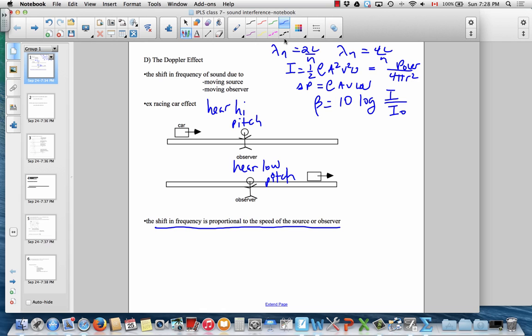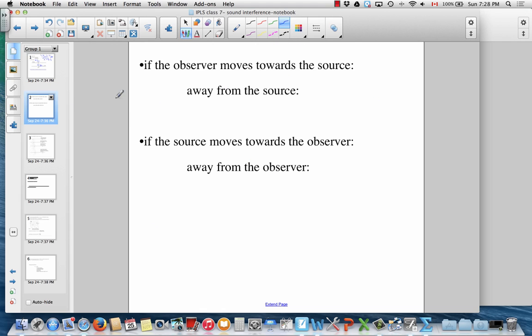So we want to describe this mathematically. Now, it actually turns out it doesn't matter what's moving, the observer or the source. Any towards motion gives you a high pitch, observer towards source or source towards observer. So if you could run really fast towards a stationary racing car, the sound from the engine would be Doppler shifted. Any away motion also gives you lower pitch.